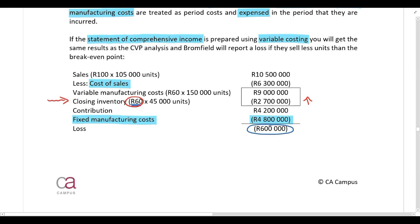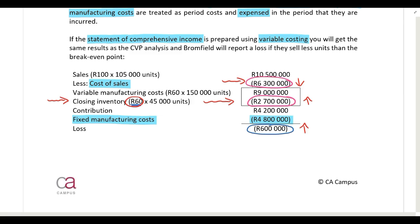If we prepare the statement using absorption costing, we include fixed manufacturing costs in the value of closing inventory, so closing inventory would include both variable and fixed manufacturing costs, meaning it would be higher. If the value of closing inventory is higher, then cost of sales would be lower because closing inventory is deducted when calculating cost of sales. If cost of sales is lower, profits will be higher. Remember, what's sitting in closing inventory is not expensed in this period — it's still an asset on the statement of financial position. It will only be expensed in the next period when added back as opening inventory.